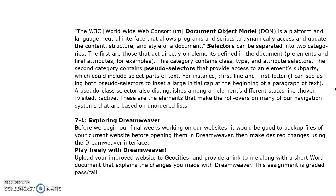Selectors can be separated into two categories. The first category contains class, type, and attribute selectors. The second category contains pseudo-selectors that provide access to an element's subparts. Pseudo-selectors always have a colon — that's how you can distinguish them. For example: first-line, first-letter. So you can specify that on the first line of a paragraph, the first letter needs to be a drop cap. Here are some other pseudo-class selectors — you'll be asked some questions about those, so it's good to have a rough idea what they are.